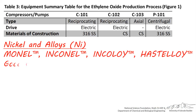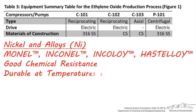Nickel, abbreviated NI, and its alloys — including Monel, Inconel, Incoloy, and Hastelloy — are the best class of metals to use for high temperature applications and very reactive chemicals.